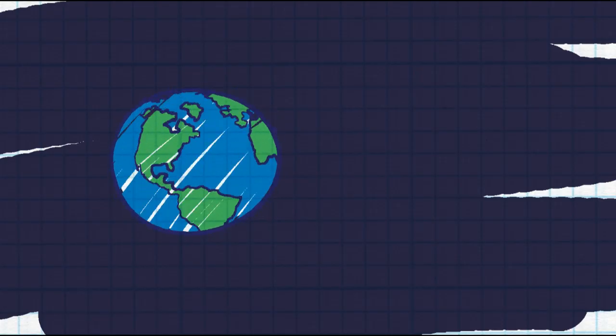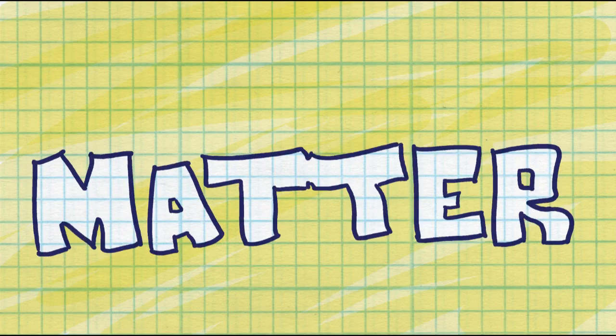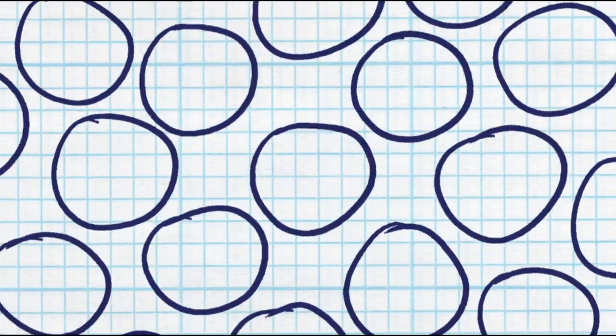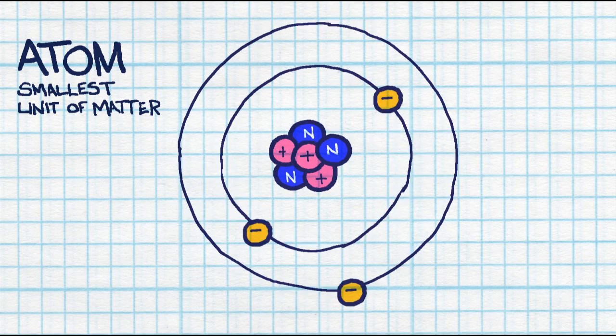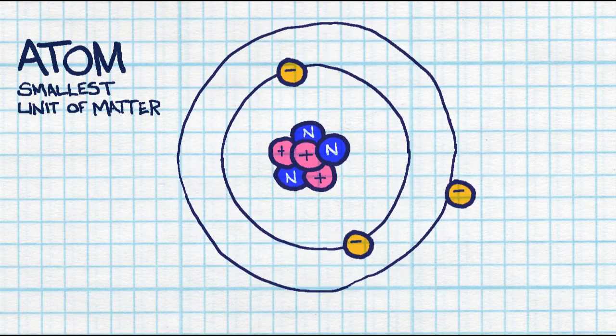Everything on planet Earth and in outer space is composed of matter. Matter has smaller elements made up of it called atoms. An atom is the smallest bit of any matter that exists.